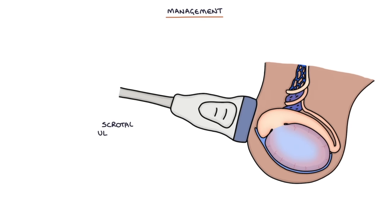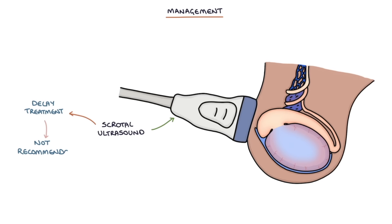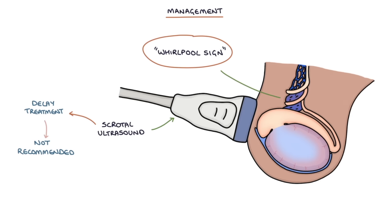A scrotal ultrasound scan can confirm the diagnosis. However, any investigation that will delay the patient going to theatre for treatment is not recommended. Ultrasound can show the whirlpool sign, which is a spiral appearance to the spermatic cord and the blood vessels.